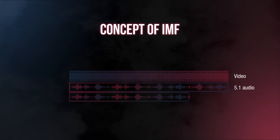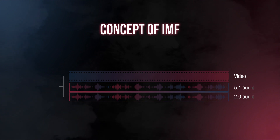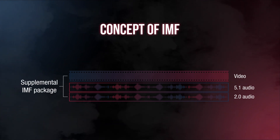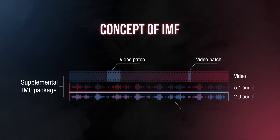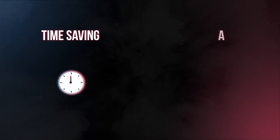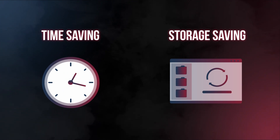The concept of IMF allows Netflix to be flexible across different versions and re-deliveries. IMF packages are built upon each other. The first IMF package created is called a complete IMF package. Packages built from it are called supplemental IMF packages. A supplemental package can reuse MXF essences from previous packages and can contain new MXF essences for changes between packages.